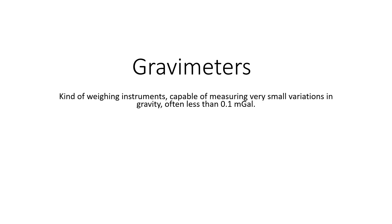We already studied what gravimeters are. Gravimeters are very sensitive weighing instruments that are capable of measuring very small changes in the value of gravity, which arise because of lateral changes in the density within the crust. These small changes in the value of gravity are often less than 0.1 milligal, but they are very useful in gravity prospecting.